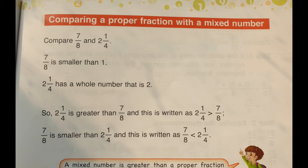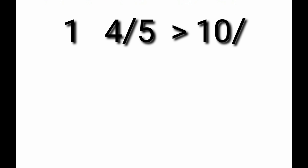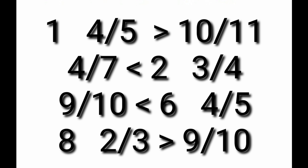Next: comparing a proper fraction with a mixed number. This is easier because a mixed number has a whole number, which is always greater than a proper fraction. Therefore, two and one fourth is greater than seven eighths. More examples: one and four fifths is greater than ten elevenths; four sevenths is smaller than two and three fourths; nine tenths is smaller than six and four fifths; eight and two thirds is greater than nine tenths.